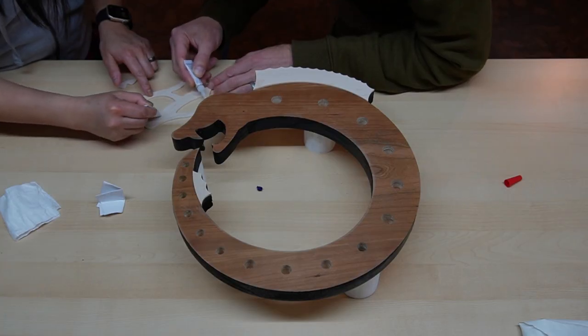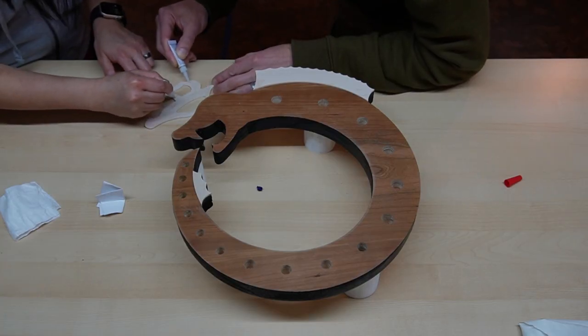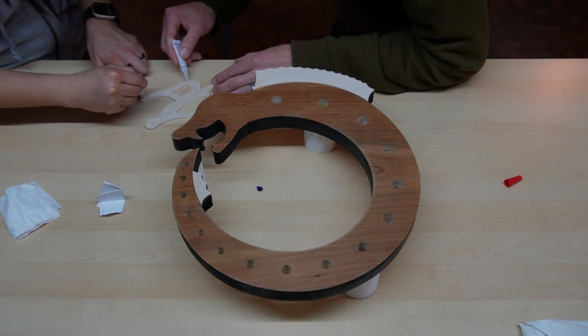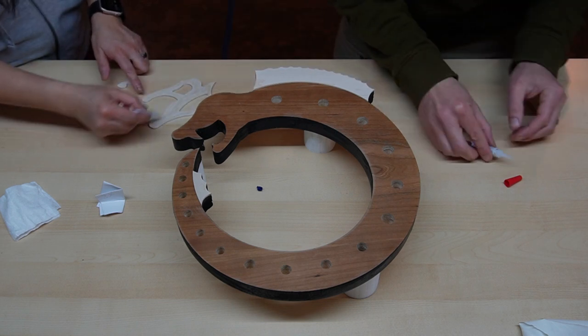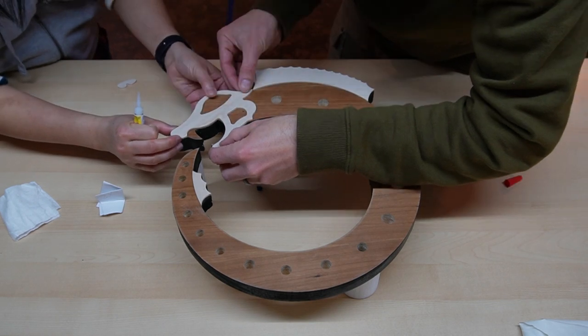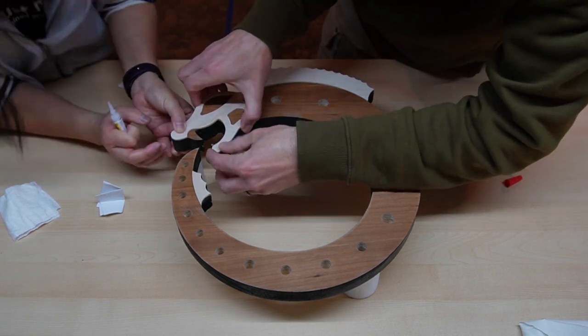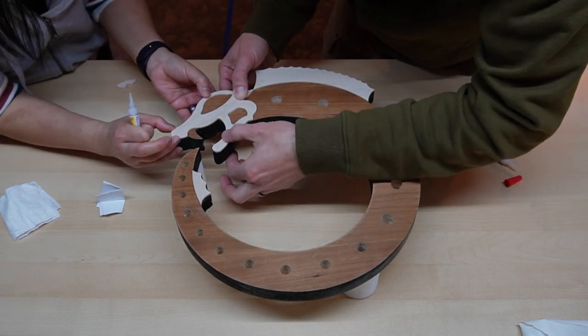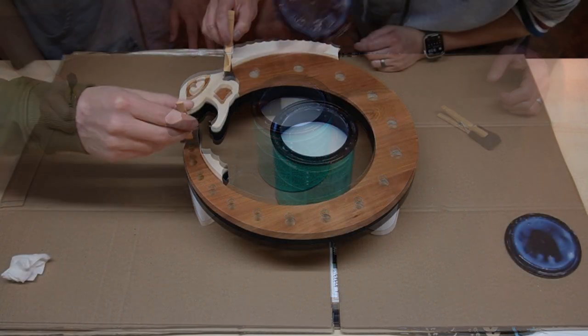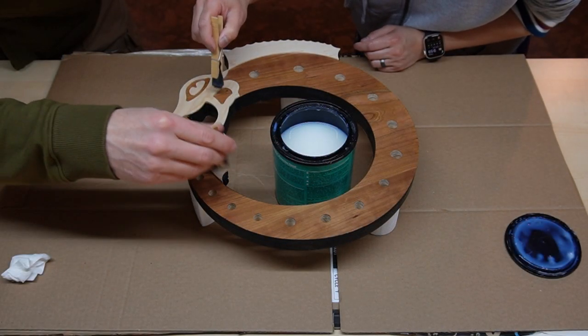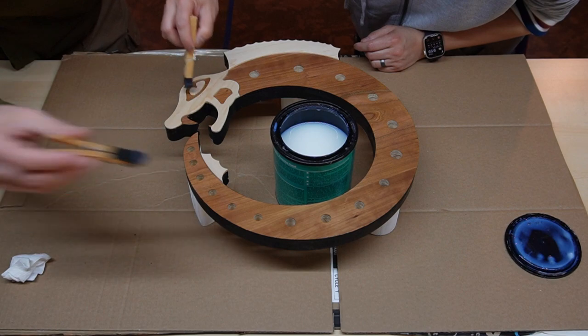With the paint all dry, we could start the slightly nerve-wracking step of gluing on the maple accents. We used super glue to hold the pieces in place, which meant we could finish this step very quickly, but it also meant that if we'd misaligned things, we'd have to live with it. Thankfully, everything went well, and we could move on to applying finish. We added two coats of polyacrylic, sanding with 400 grit in between coats.